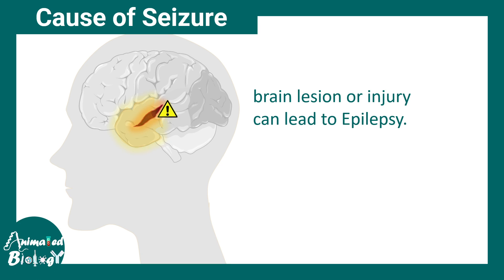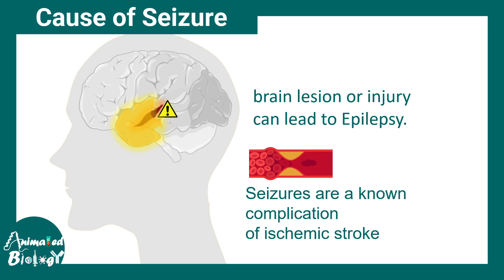Brain lesions can lead to seizures, and sometimes it could be underlying epilepsy as well. There can also be ischemic complications — for example, seizure development is observed in ischemic stroke patients, and it is basically always associated.